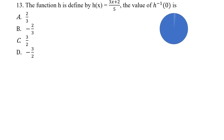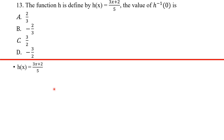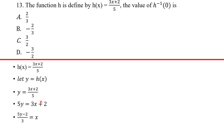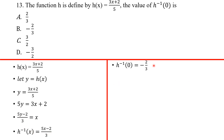For h(x) = (3x + 2) / 5, find h⁻¹(0): let y = (3x + 2) / 5, then making x the subject gives x = (5y − 2) / 3. Swapping x and y, h⁻¹(x) = (5x − 2) / 3. Evaluating at 0: h⁻¹(0) = (5(0) − 2) / 3 = −2/3. Our answer is B.